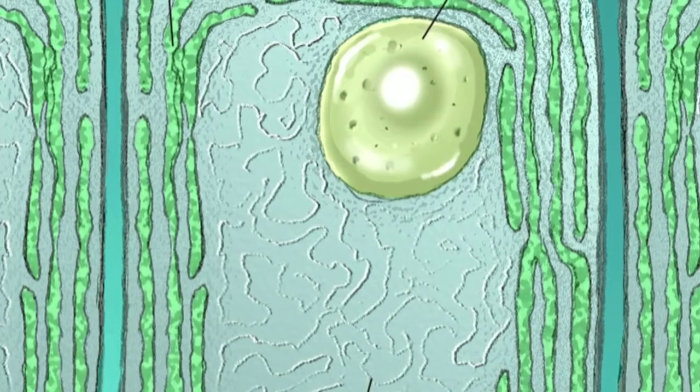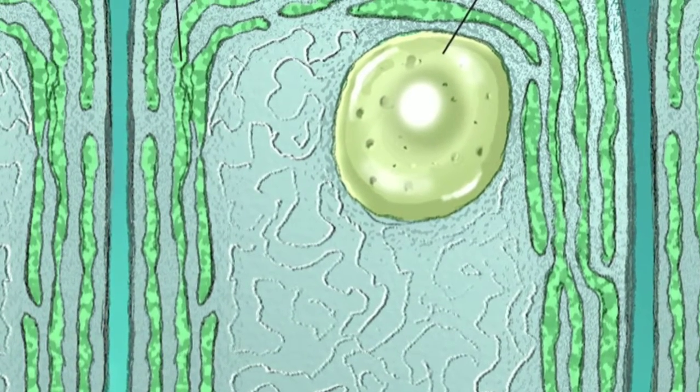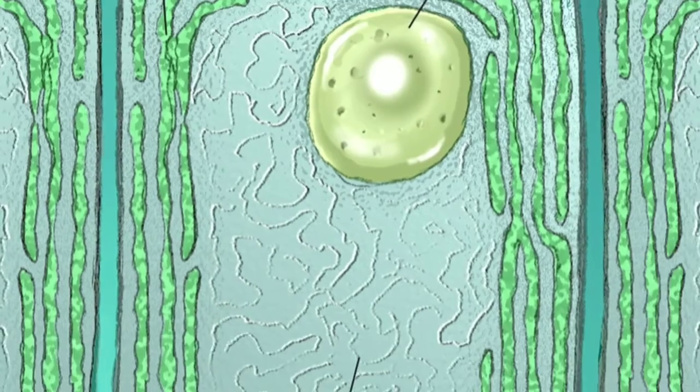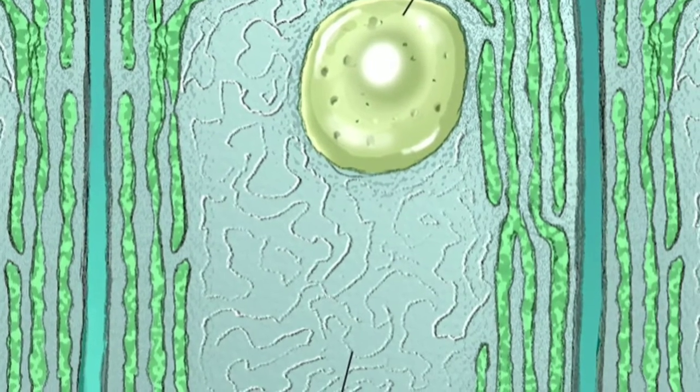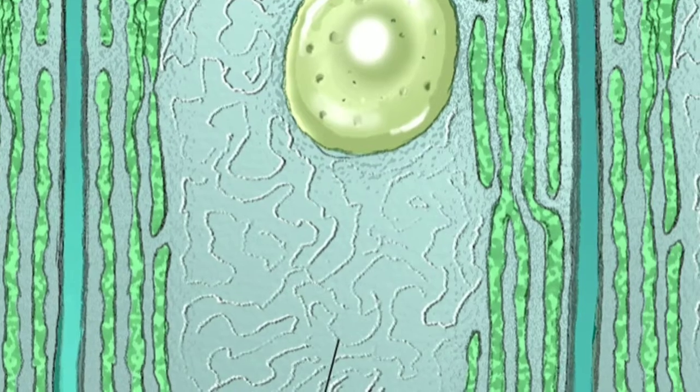We studied earlier that cell structure of cyanobacteria contains mucilage sheet, cell wall, cytoplasmic membrane, chromatoplast, centroplast, etc.